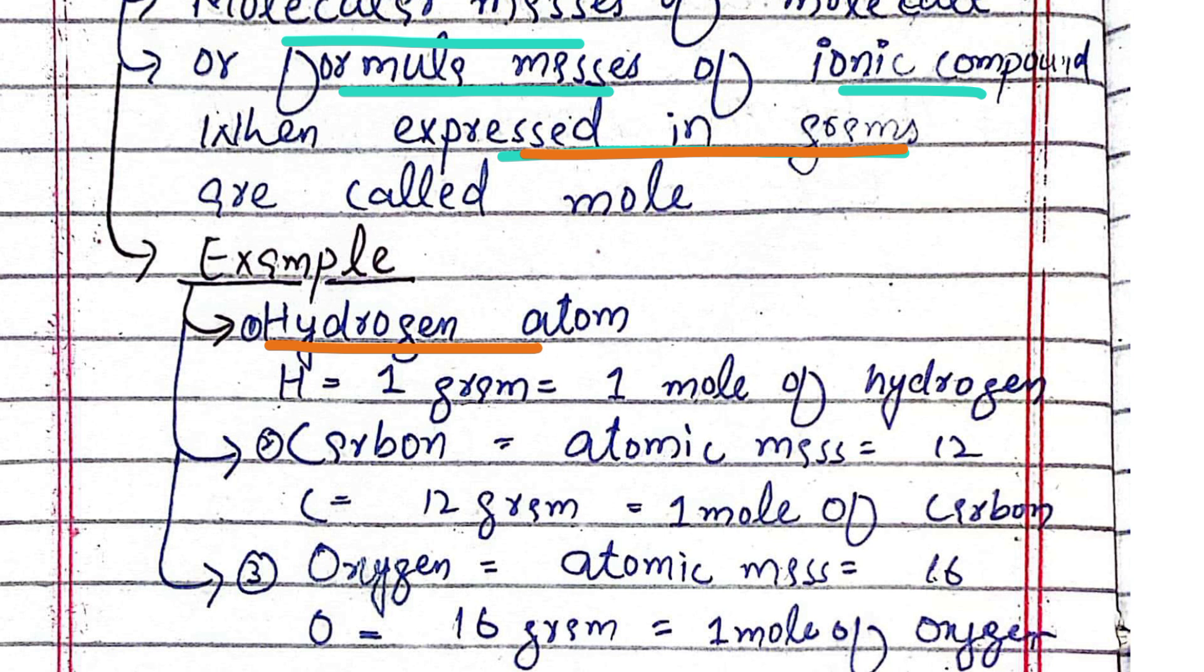For hydrogen atom, atomic mass is 1 gram, so 1 gram of hydrogen is equal to 1 mole of hydrogen.